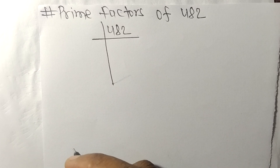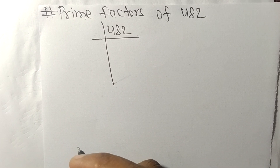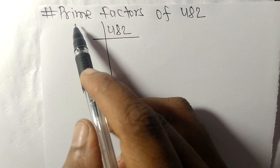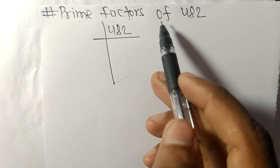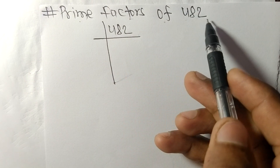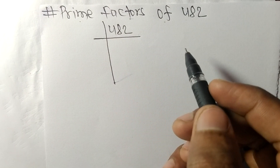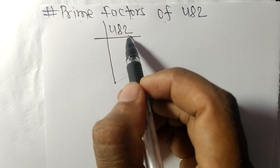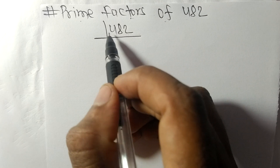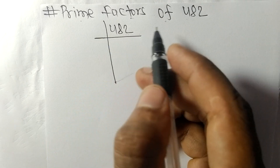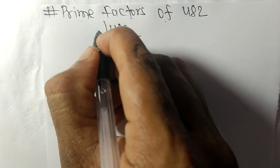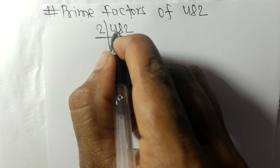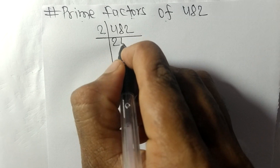Today we shall learn to find the prime factors of 482. Since it ends in an even number, it is divisible by 2. Dividing 482 by 2, we get 241.